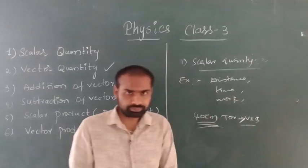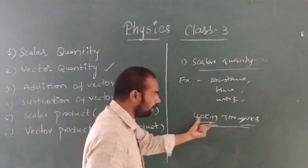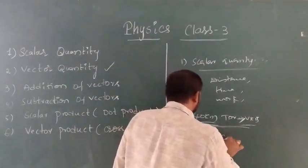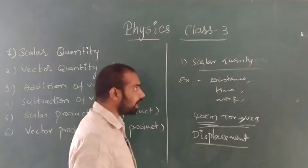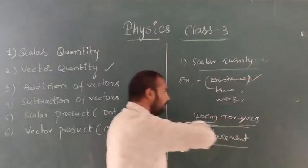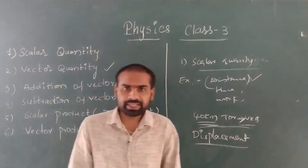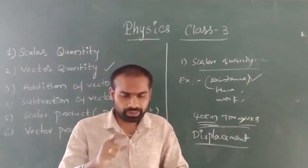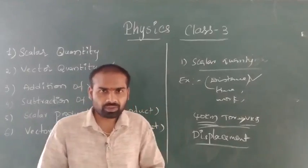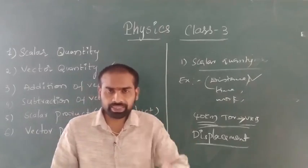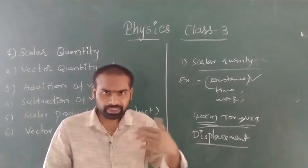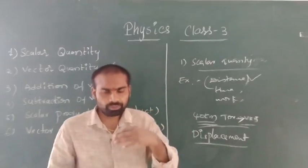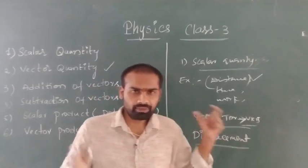Vector quantity has both magnitude and direction. If I say from Tandu to Vikarabha it is 40 kilometers, that is a vector quantity — it is displacement, not distance. Displacement is a vector quantity but distance is a scalar quantity. In competitive exams like MSc Physics, you may be asked: given velocity, acceleration, electric field, and distance, which is the scalar quantity? Distance is the scalar quantity; the remaining are vector quantities.